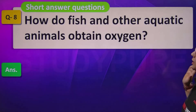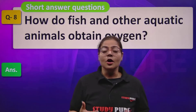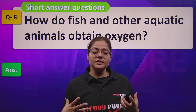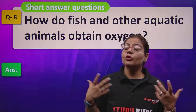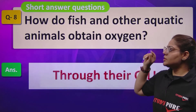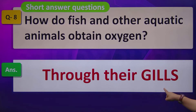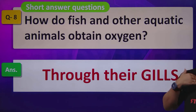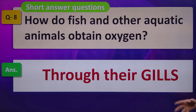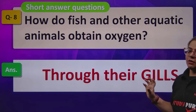How do fish and other aquatic animals obtain oxygen? Since they are aquatic and live in water, how do they take in oxygen? The oxygen is dissolved in water, so they have an organ called gills. Gills help them take dissolved oxygen from the water, and fish and other aquatic animals breathe through their gills. Nature has made an arrangement for every organism.